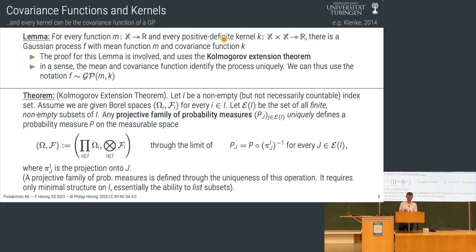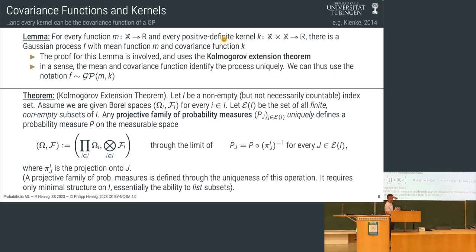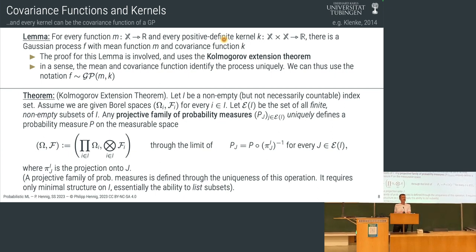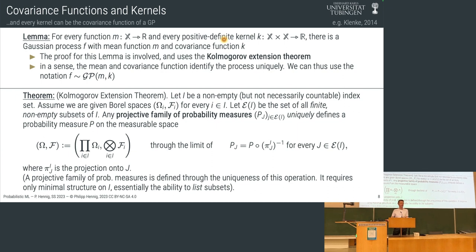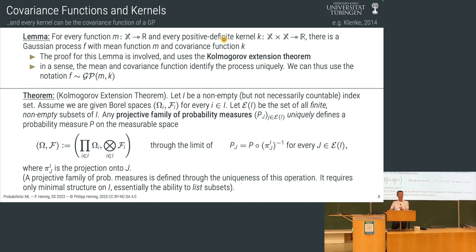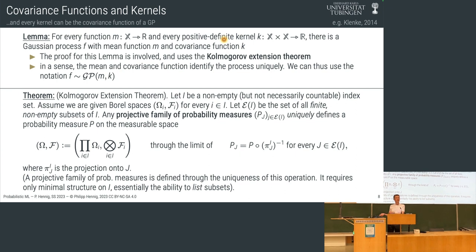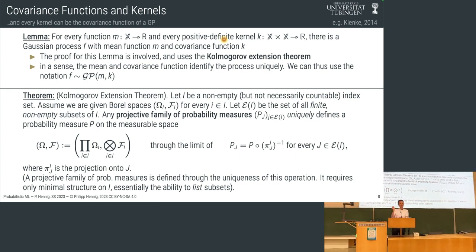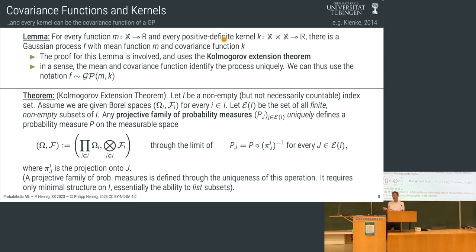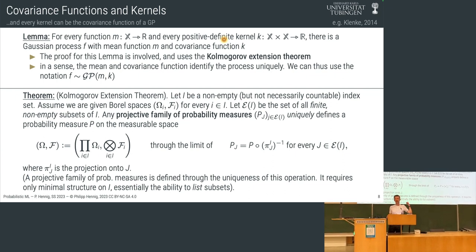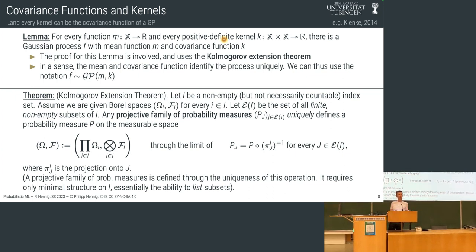What this theorem really just says is: you can define Gaussian processes if you can define the operation 'call' that we have in our code. If the x-space allows us to call on x and returns an array — and arrays have all the properties we need: we can permute their entries, we can drop parts of them, we can slice through them — then we're good, then we can define a stochastic process on this space and call it a Gaussian process. That's kind of cool because it means it's a very powerful and general concept we can use on very complicated spaces.